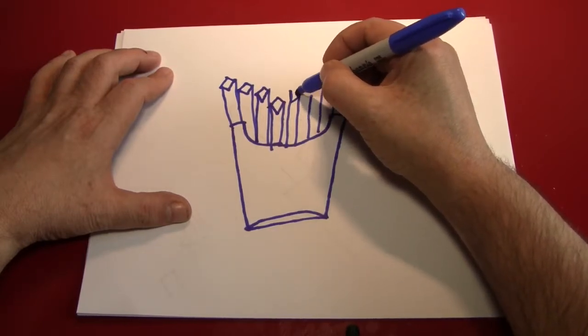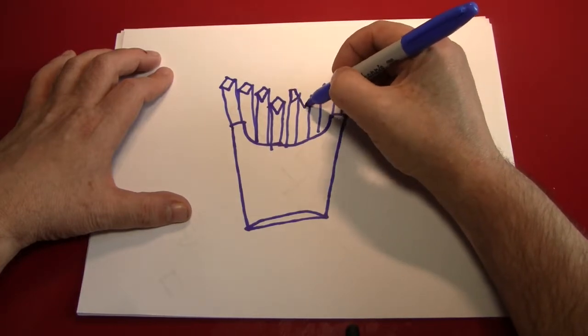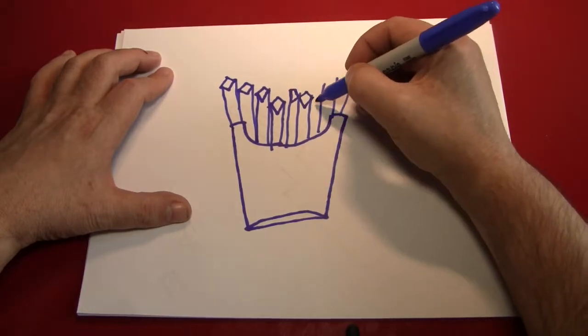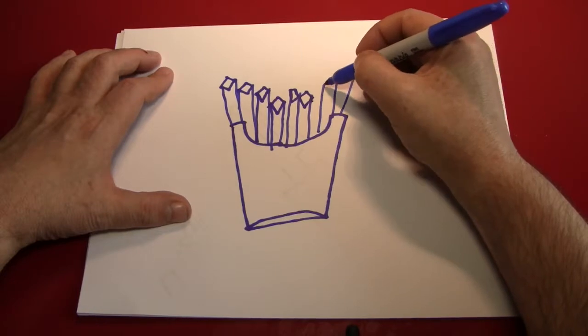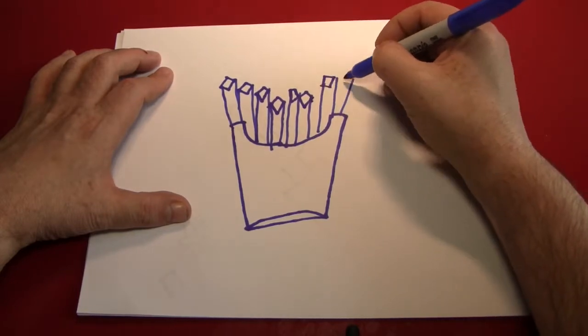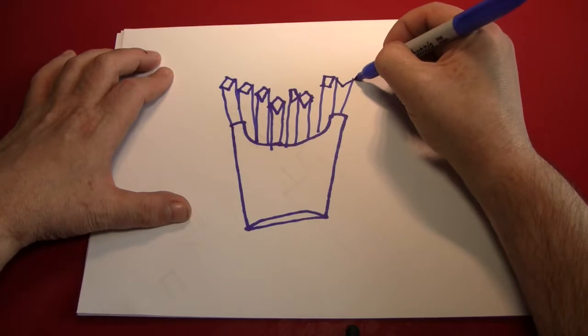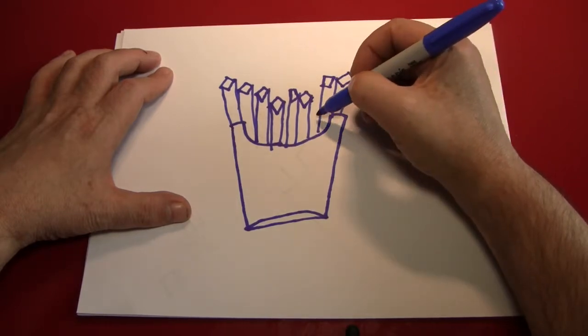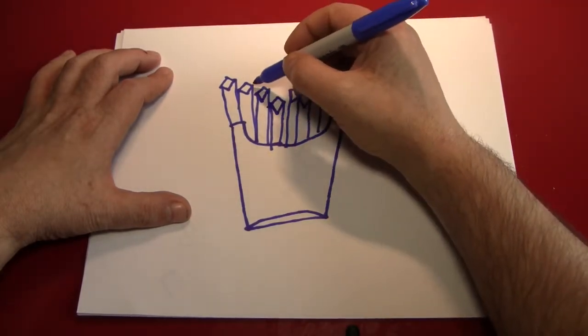But after you get the first row of French fries done, you'll put a second row in and give it a little bit more depth. Or at least I will. I can't really say what you're going to be doing because I can't see you through the camera. I am not the NSA.